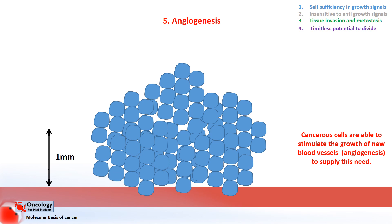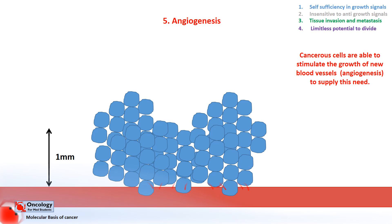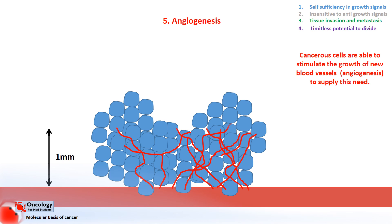As a tumour grows it faces the same issues — how can it get the nutrients it needs if it's bigger than one millimeter? What would happen is the cells further away would die. But by releasing hormones that stimulate the growth of blood vessels, the tumour is able to grow its own blood supply and thrive. These hormones are again proteins, and mutations in the genes coding for these proteins can sustain angiogenesis in cancerous cells.